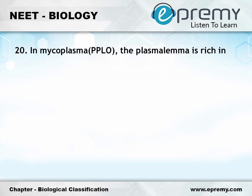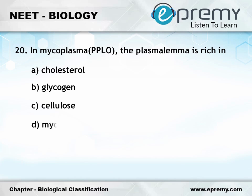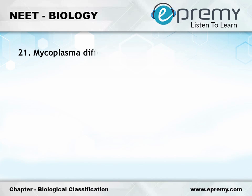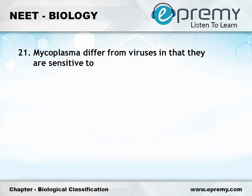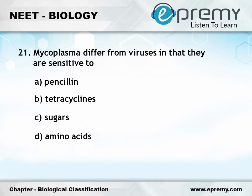Question number 20: In mycoplasma (PPLO), the plasma membrane is rich in — Option A: cholesterol; Option B: glycogen; Option C: cellulose; Option D: myosin. The answer is Option A, cholesterol. Question number 21: Mycoplasma differ from viruses in that they are sensitive to — Option A: penicillin; Option B: tetracyclines; Option C: sugars; Option D: amino acids. The answer is Option B, tetracyclines.